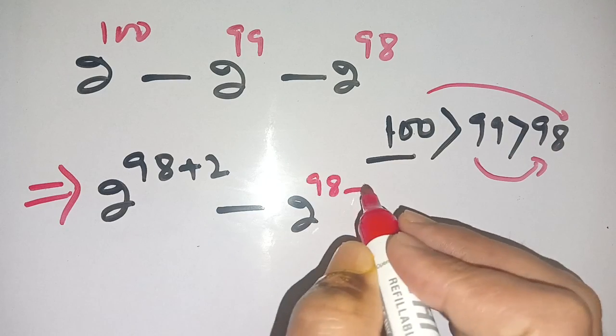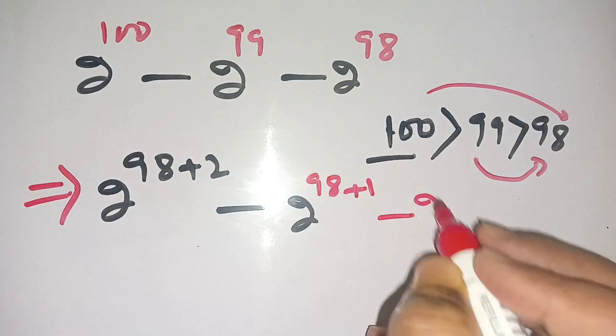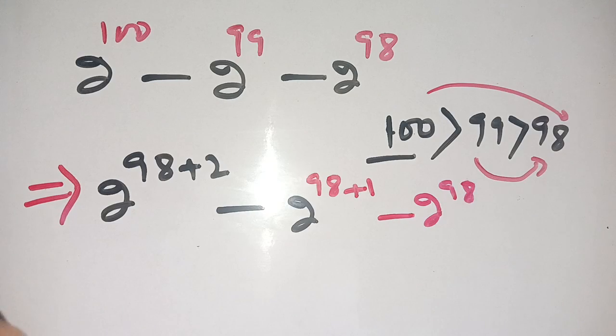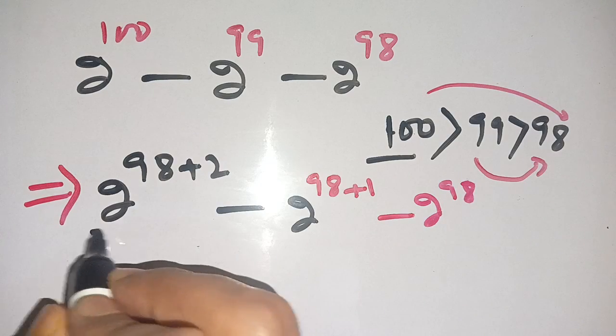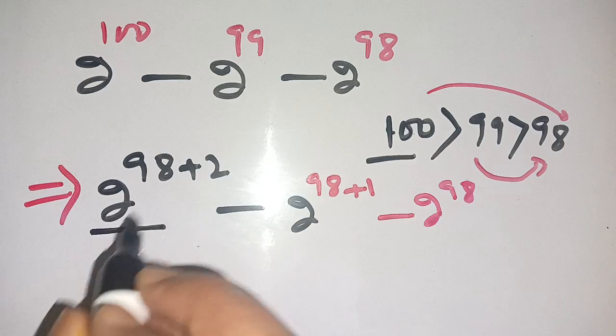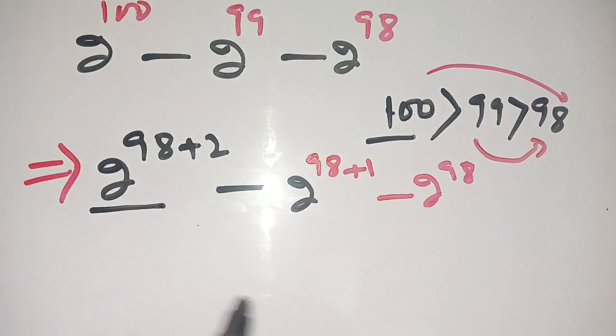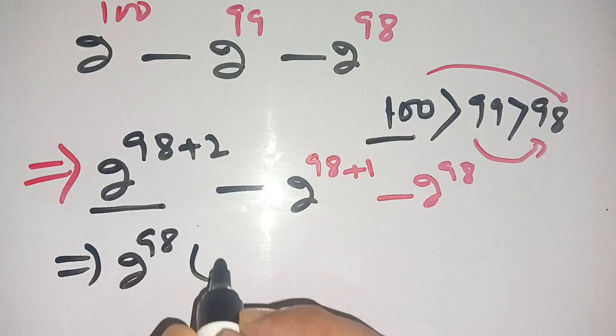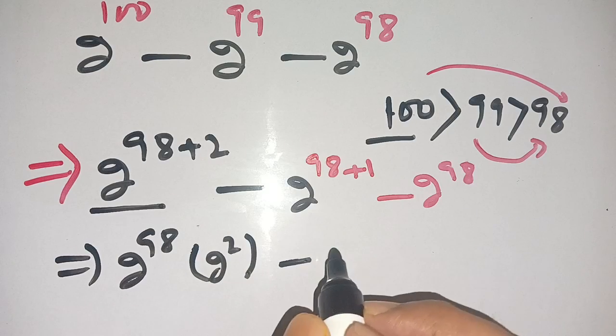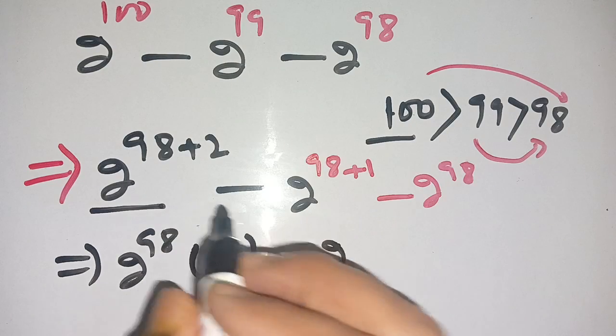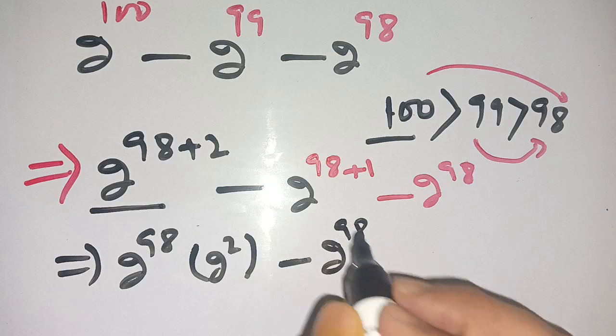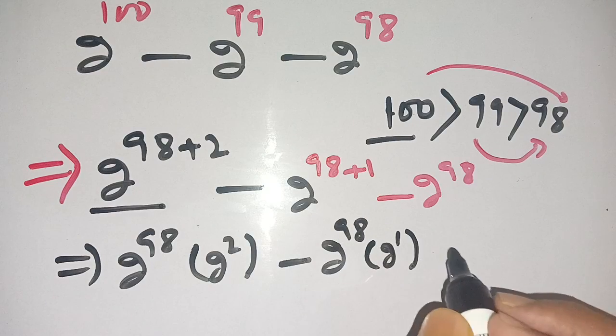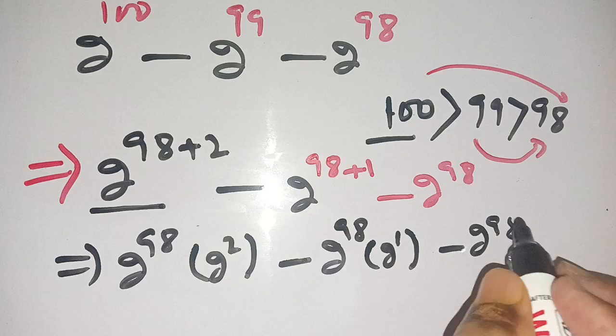Now we apply the power rule: a^(n+m) equals a^n times a^m. On applying this, we get 2^98 times 2^2 minus, applying the same identity, 2^98 times 2^1 minus 2^98.